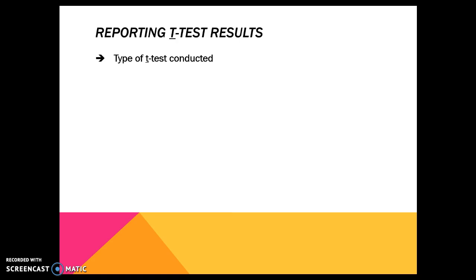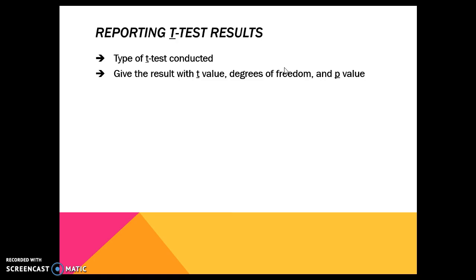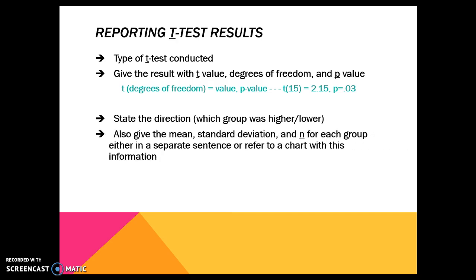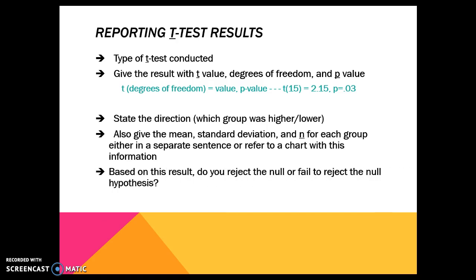When we report a t-test or any kind of statistical test, the first thing you do is state what type you used — did you use Morse, pooled, or a one-sample t-test? Then give the result with a t-value (e.g., t = 2.1), the degrees of freedom (e.g., 49), and the associated p-value (e.g., p = 0.03). We also state the direction — if we found a significant difference, which group was higher? We also want to provide the mean, standard deviation, and sample size, which can appear in a chart. And of course, state whether you reject the null or fail to reject the null, and what that means — is there a difference or not?